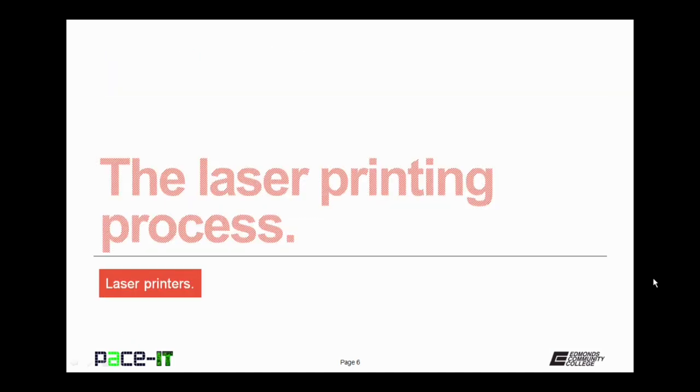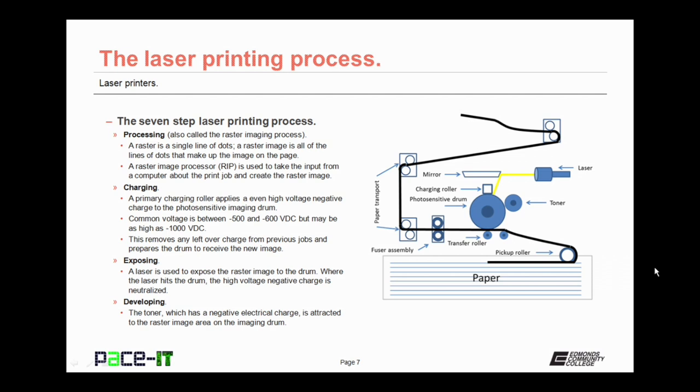Now let's move on to the actual laser printing process. The laser printing process has seven steps. The first step is processing, also called the raster imaging process. A raster is a single line of dots that are used as a component of an image. A raster image is all of the lines of dots that make up the image on the page. A raster image processor or RIP is used to take input from the computer about the print job and create the raster image of the page. What you need to remember is that processing is the creation of the raster image of the page.